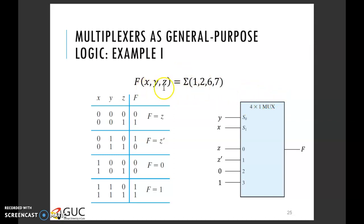However, if we had here like four input variables, subtracting one of them would just give us 3 at the end, so 2 power 3 would be 8 and then we would be needing an 8 by 1 multiplexer.